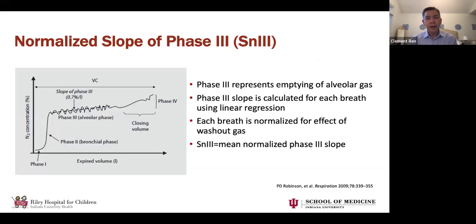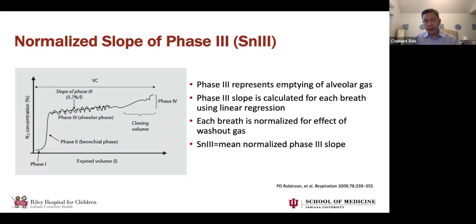The normalized slope of phase three, also abbreviated SN3, relates to those slopes on the washout curve. In a single breath washout where someone inspires 100% oxygen and exhales, initially you're exhaling tracheal and large airway gas. Phase three is considered to represent alveolar emptying — there's a slope because it's gradual. Then finally you hit the closing volume. To calculate SN3, the phase three slope for every breath is calculated using linear regression and then normalized — because each breath has a different gas composition, starting at 80% nitrogen but later at, say, 60% nitrogen and 40% oxygen. The average of those normalized slopes is SN3.